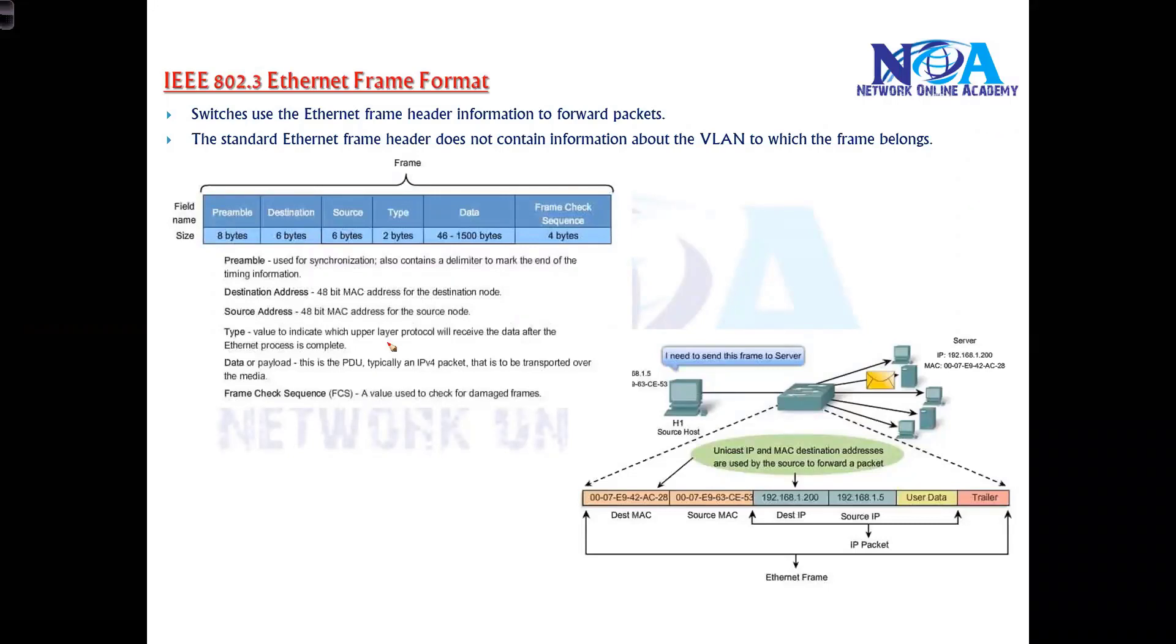Basically when a packet travels within the LAN, let's take an example. There is a PC here on my LAN with an IP address of 192.168.1.5, that is my source IP. This particular device is trying to communicate with the destination IP. Let's say the destination address is 192.168.1.200 within the LAN.